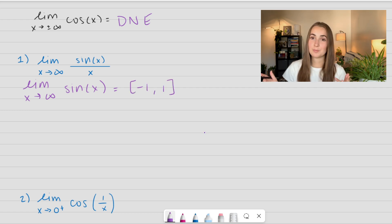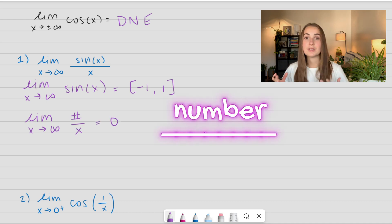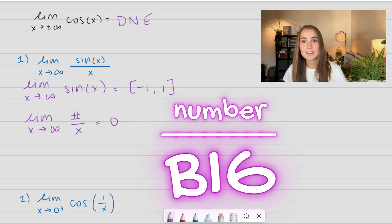So if we look at our denominator, we know that the limit as x approaches infinity of any number over x is going to go to 0, right? As our denominator gets really, really large, 1 over big goes to 0.